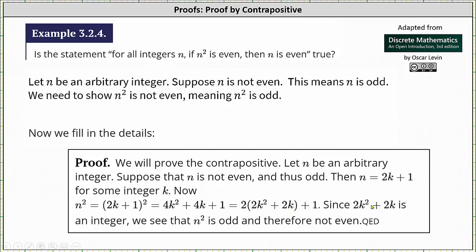Since 2k² + 2k is an integer, we see that n² is odd and therefore not even. QED.